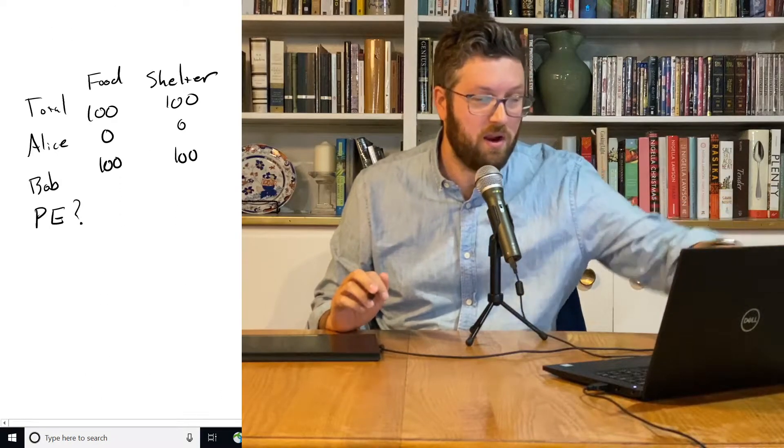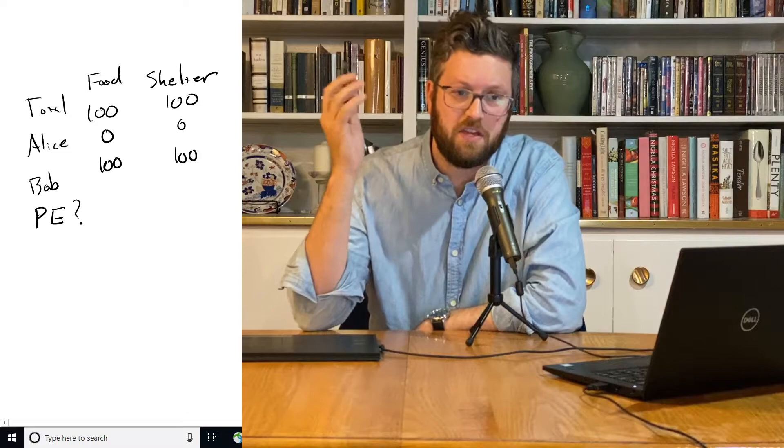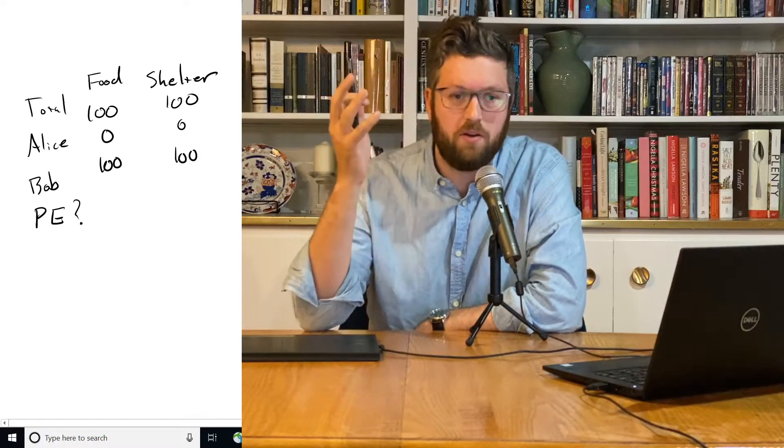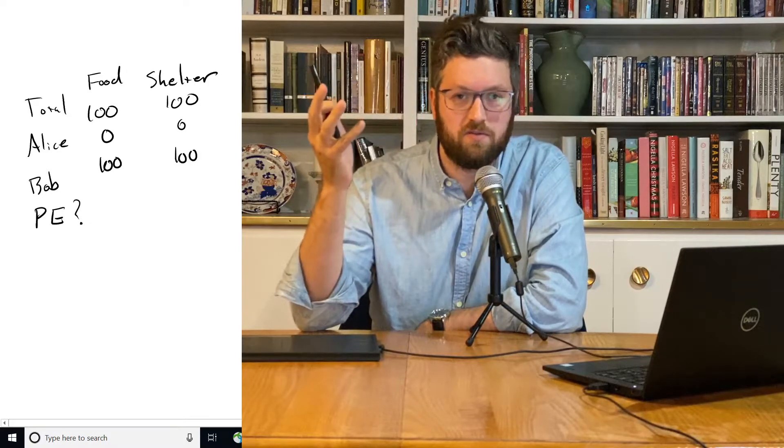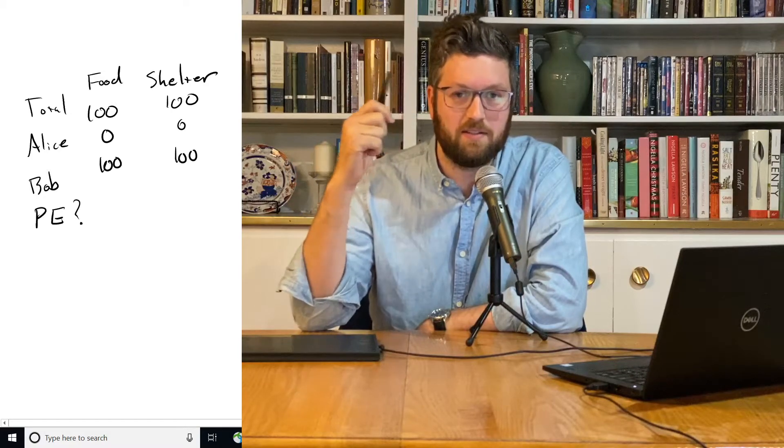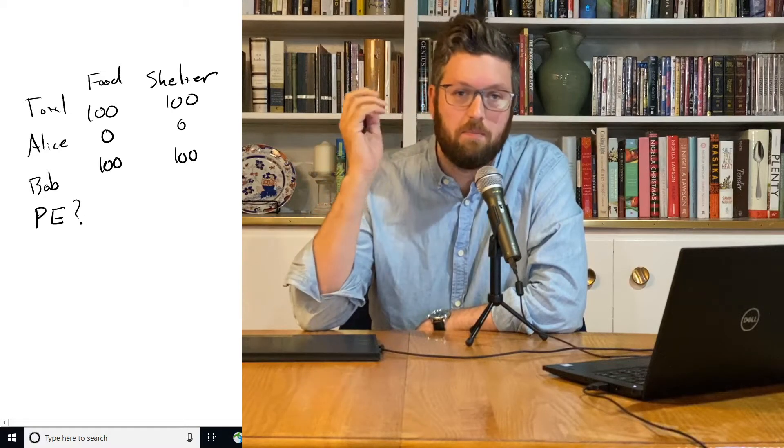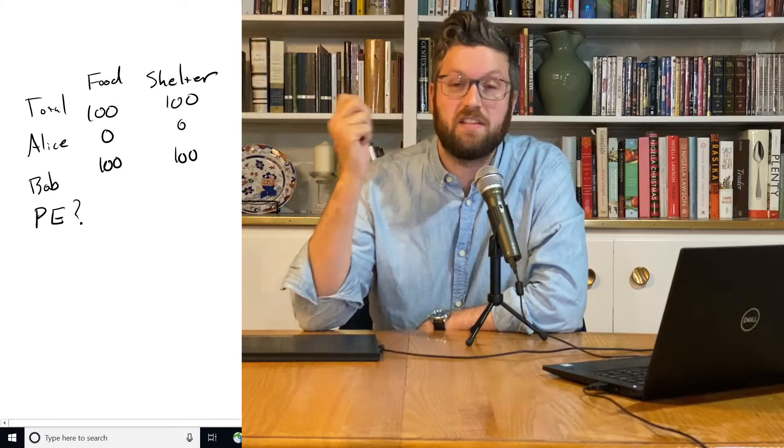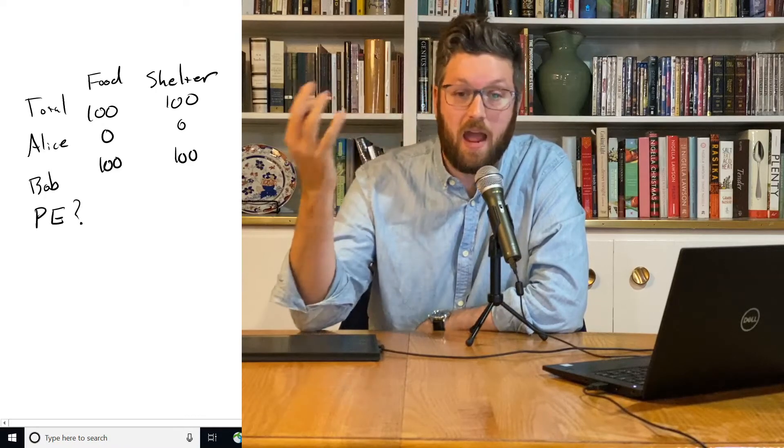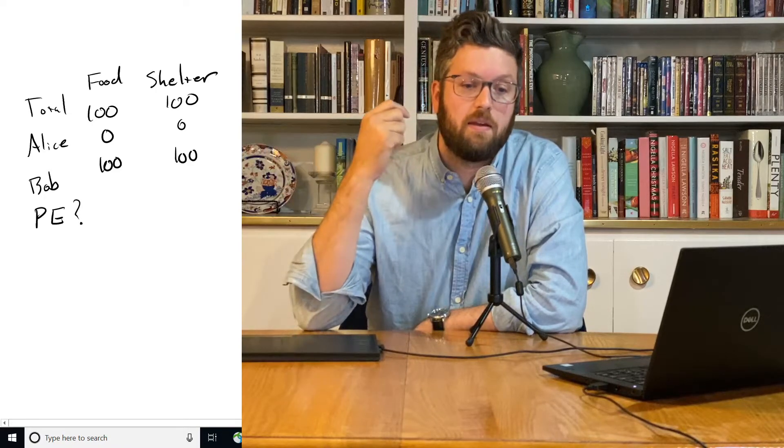Lastly, we've got one where we are no longer dividing the stuff equally. We've got 100 units of food to allocate, 100 units of shelter, and we're giving all of it to Bob. Alice gets nothing. So Bob is living like a king. He's seized all the property, maybe. Alice is perhaps dead. Is this Pareto efficient?